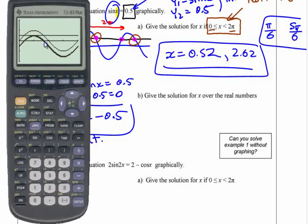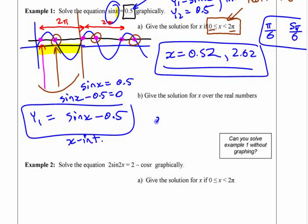So either way you do it, you get the same x-values. If you find the x-intercepts of that thick curve there, it gives you the same two values. It gives you x equals 0.52 and 2.62, those two values.